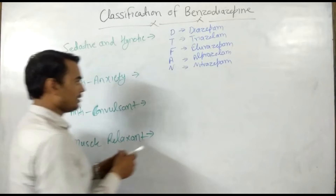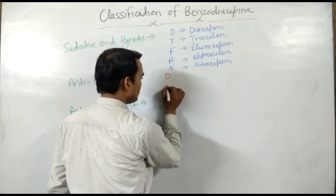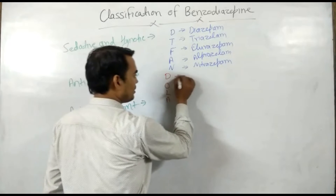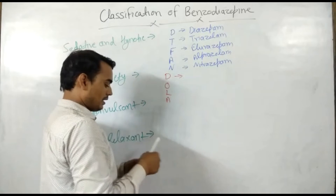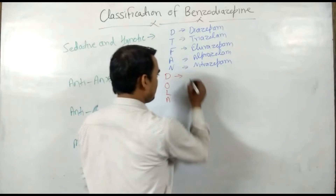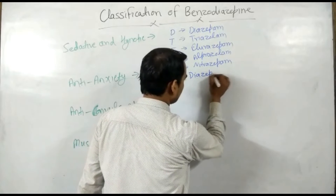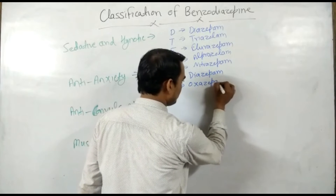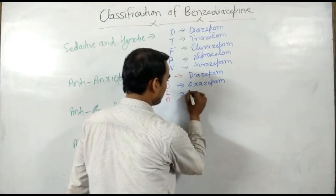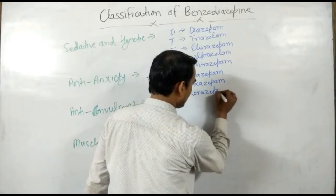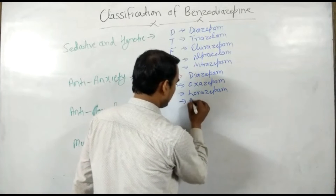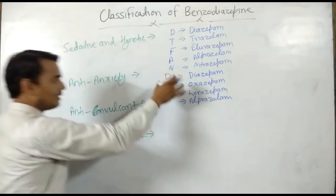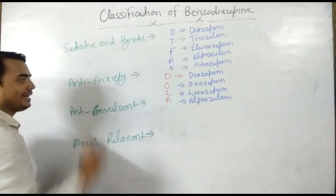For anti-anxiety action, remember the word DOLA. D for Diazepam, O for Oxazepam, L for Lorazepam, and A for Alprazolam. These four drugs have anti-anxiety action.